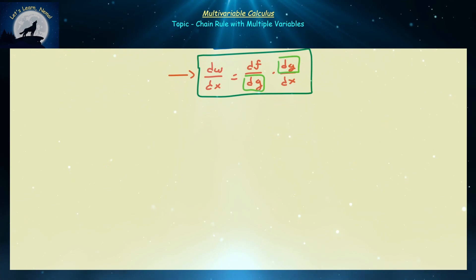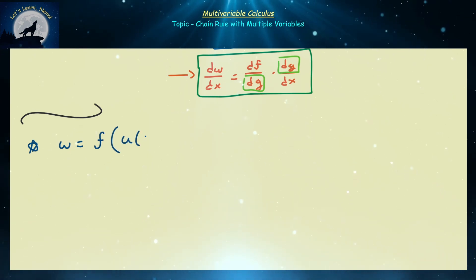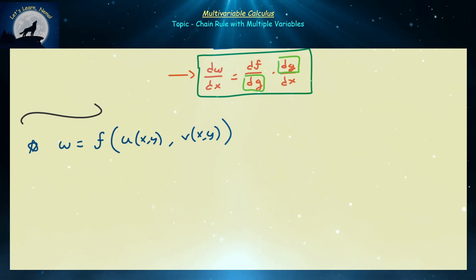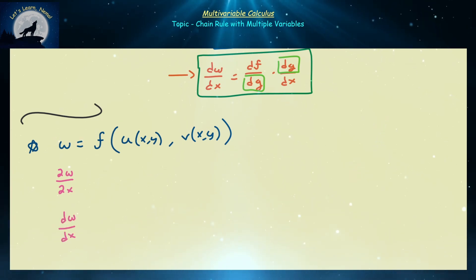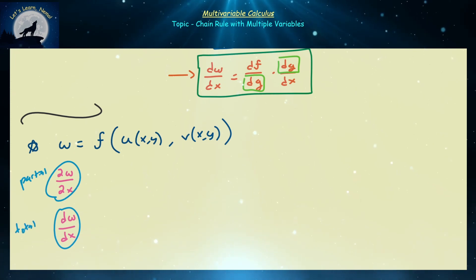So what are we going to be looking at today, and why do we care? Now w is going to be a function of two functions, u and v, and u and v are both going to be functions of independent variables x and y. There are a couple of quantities one may be interested in: the partial derivative of w with respect to x, or the total derivative of w with respect to x — referred to as a partial derivative and a total derivative, or the implicit total derivative.